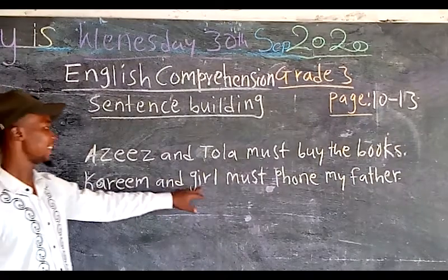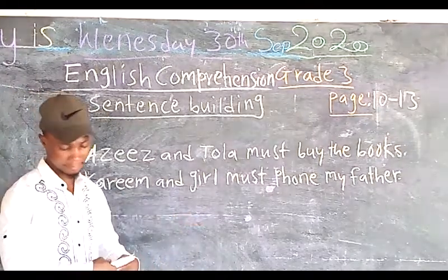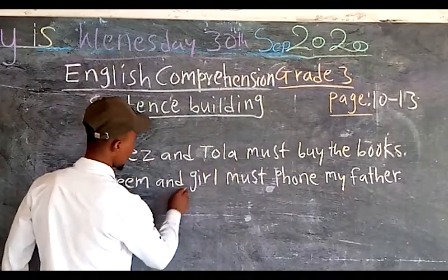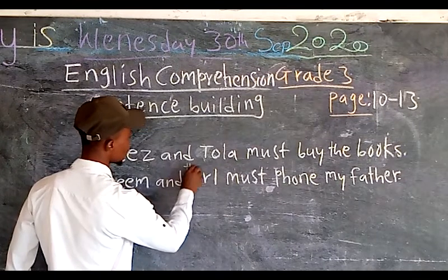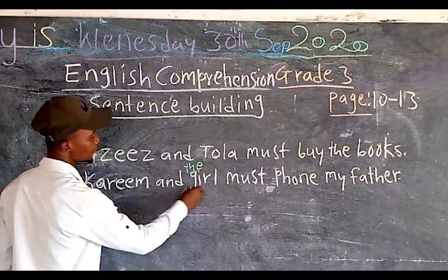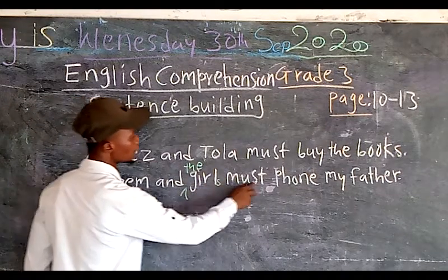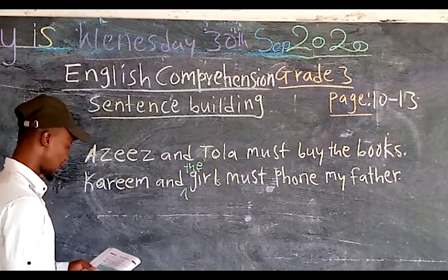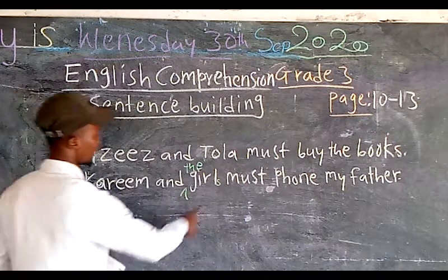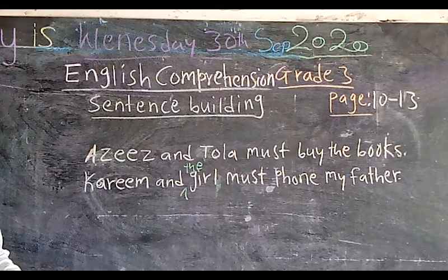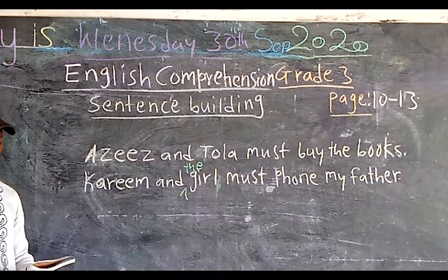Here is an example: 'Karim and the girl must phone my father.' There is an accent mark — something is supposed to be here but it is missing. So the sentence reads: 'Karim and the girl must phone my father.' You have to do the remaining sentences.